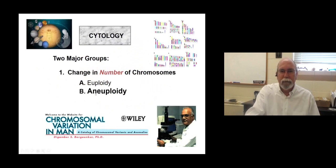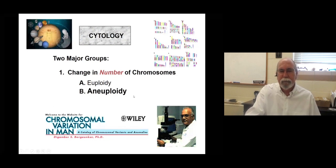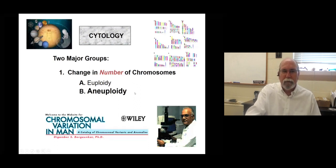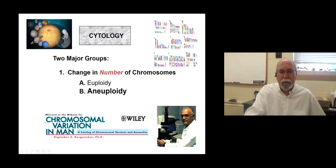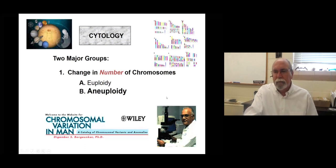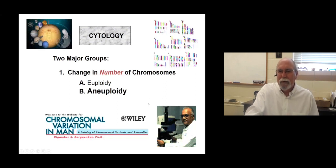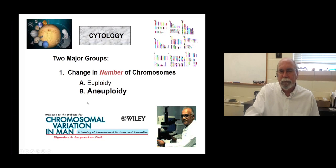We're at aneuploidy. We're going to use human models for this because, unlike euploidy — which is simply not tolerated in humans other than in mosaicism and other rare cases — aneuploidy is quite common in human systems. There is a very large collection of information on humans called the Chromosome Variation in Man — that was Dr. Pogonker's great book. You can go online now and search the website for any types of chromosome anomalies you want to look for.